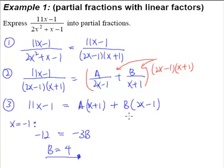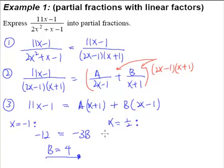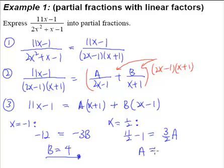To find A, we need to eliminate B. We let x equal one-half, because (2 times one-half minus 1) equals 0, which eliminates B. Substituting: 11 times one-half minus 1 equals 9/2, and (one-half plus 1) equals 3/2, giving (9/2) equals (3/2)A. Therefore A equals 3.